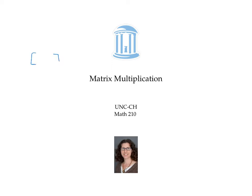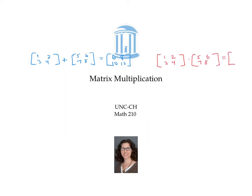Previously, we defined the sum of two matrices by adding corresponding elements. It would be possible to invent a matrix multiplication that works similarly, just by multiplying element by element — one times five is five, two times six is 12, and so on. But we're not going to do matrix multiplication this way. The standard definition of matrix multiplication is more complicated, but also much more useful.